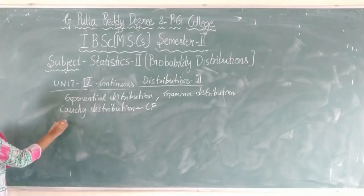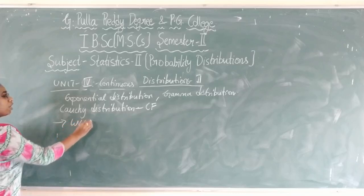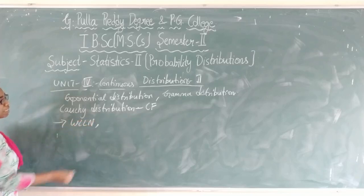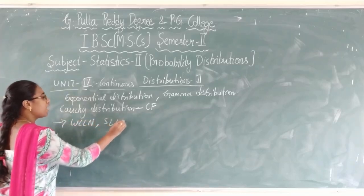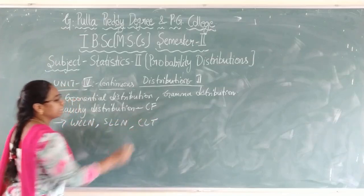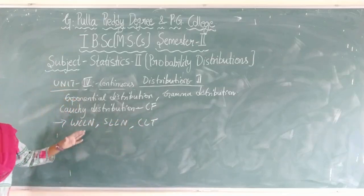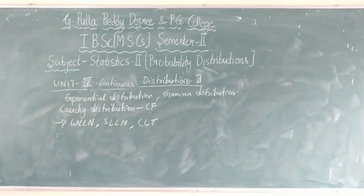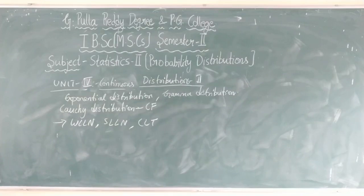In the second part of unit 4, we will learn about the weak law of large numbers, the strong law of large numbers, and the central limit theorem. These three topics will conclude the fourth unit. Write down the syllabus on the first page; in the next class we will start unit 1.